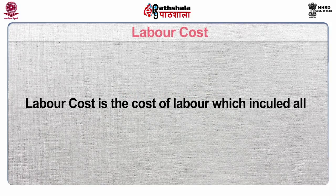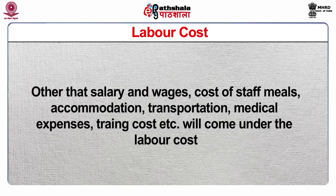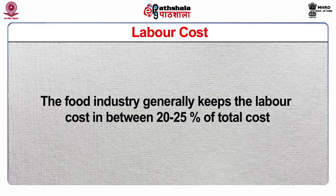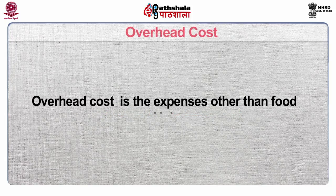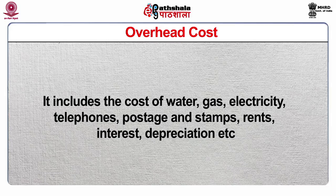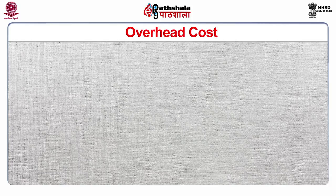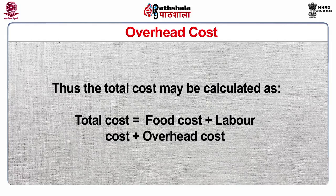Labor cost is the cost of labor, which includes all expenses incurred for the welfare of employees in cash and kind. Other than salary and wages, cost of staff meal, accommodation, transportation, medical expenses, training costs, etc., will come under labor cost. The food industry generally keeps labor cost in between 20 to 25 percent of total cost. Overhead cost is the expenses other than food and labor. It includes the cost of water, gas, electricity, telephones, postage and stamps, rents, interest, depreciation, etc. The catering industry generally keeps overhead cost in between 20 to 25 percent of total cost. Thus, the total cost may be calculated as: Total Cost = Food Cost + Labor Cost + Overhead Cost.